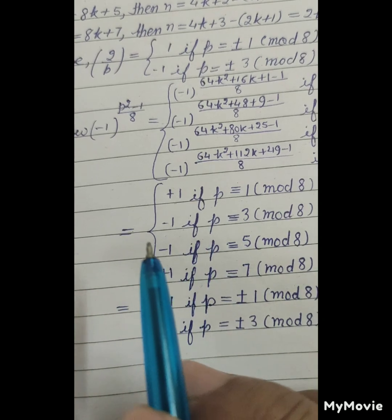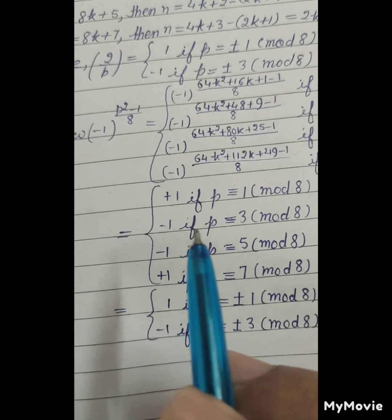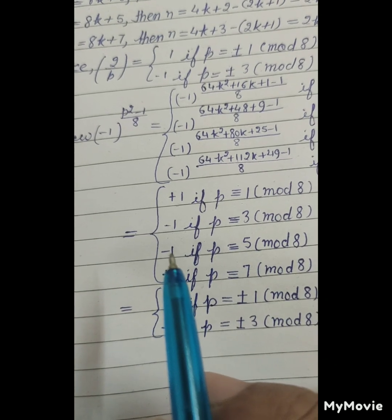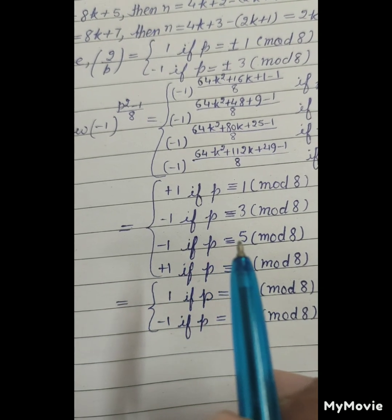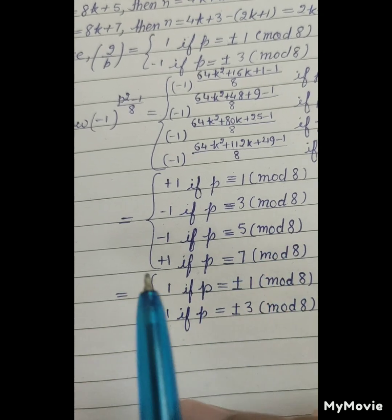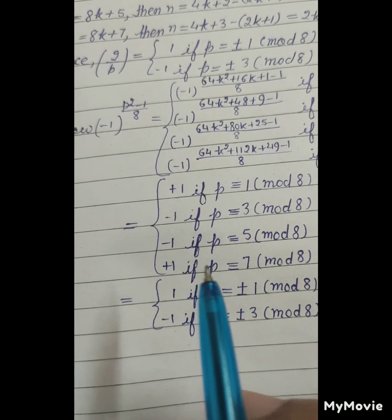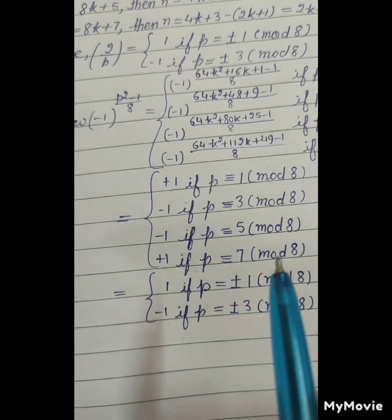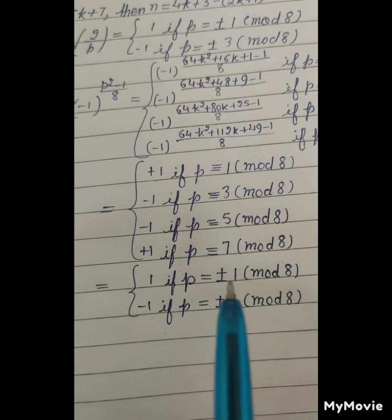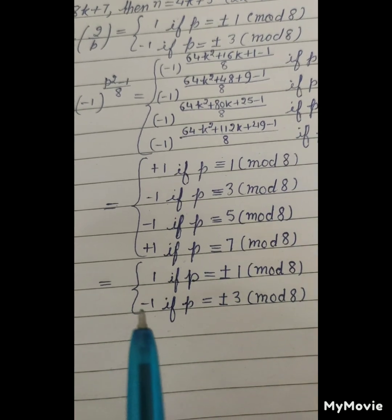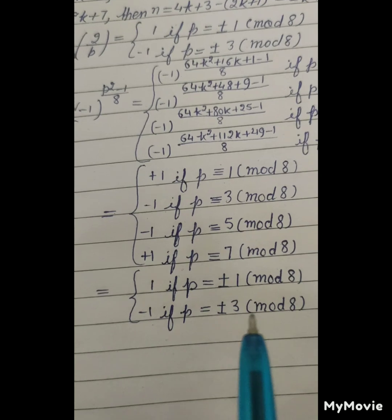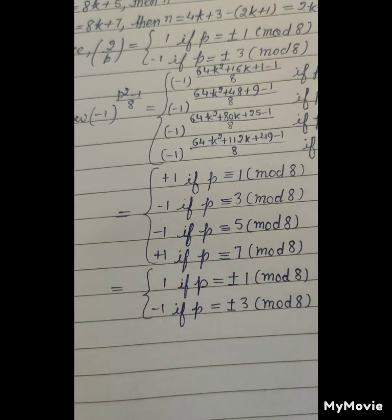Therefore (−1)^((p²−1)/8) equals +1 if p is congruent to 1 modulo 8, equals −1 if p is congruent to 3 modulo 8, equals −1 if p is congruent to 5 modulo 8, and equals +1 if p is congruent to 7 modulo 8. In summary: (2/p) = 1 if p ≡ ±1 modulo 8, and (2/p) = −1 if p ≡ ±3 modulo 8.